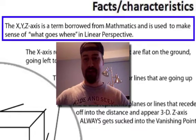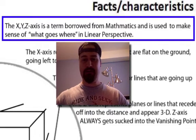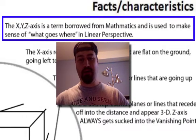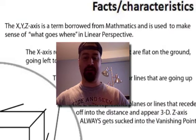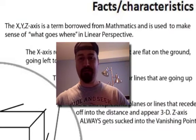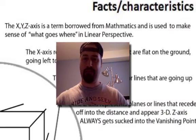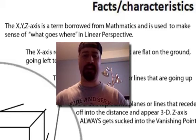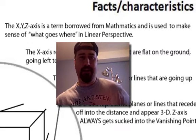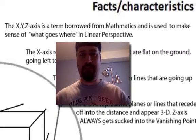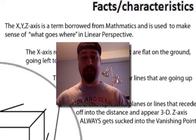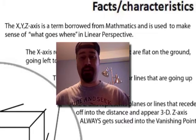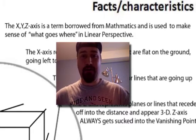Now this is a term from mathematics that I've borrowed, and it's used to make sense of what goes where in linear perspective. Linear perspective is just the illusion of depth in your piece. Don't be afraid of the term x, y, and z axis. It's really not a big mathematical equation. It's just simply labels to help you find what goes where in a perspective piece.